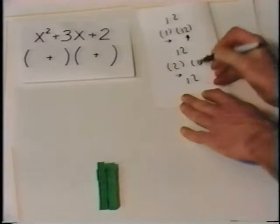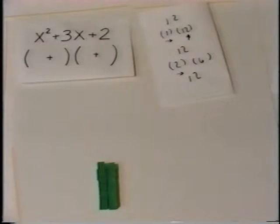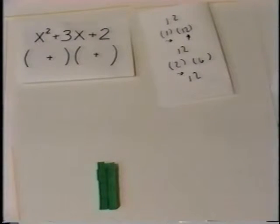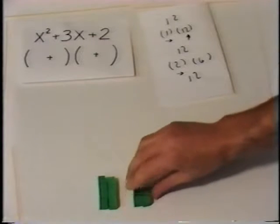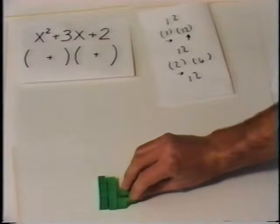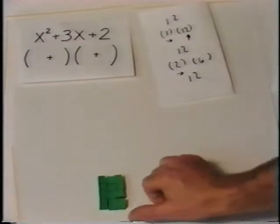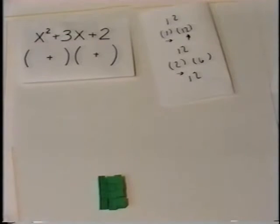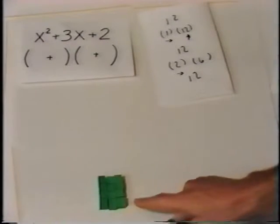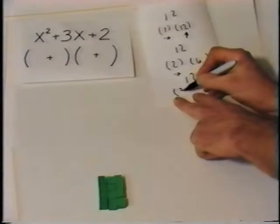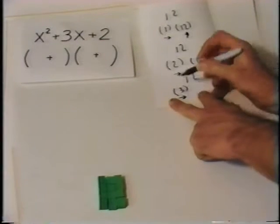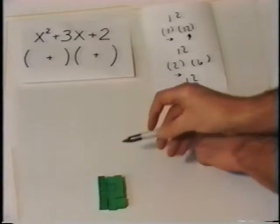Let's see if we can factor 12 again. What is factoring? Factoring is building a rectangle. Let's see if we can build a rectangle that is 3 over. Yes, we built a rectangle that is over 3. What are our factors? Our distance over is 3, and our distance up is 4.